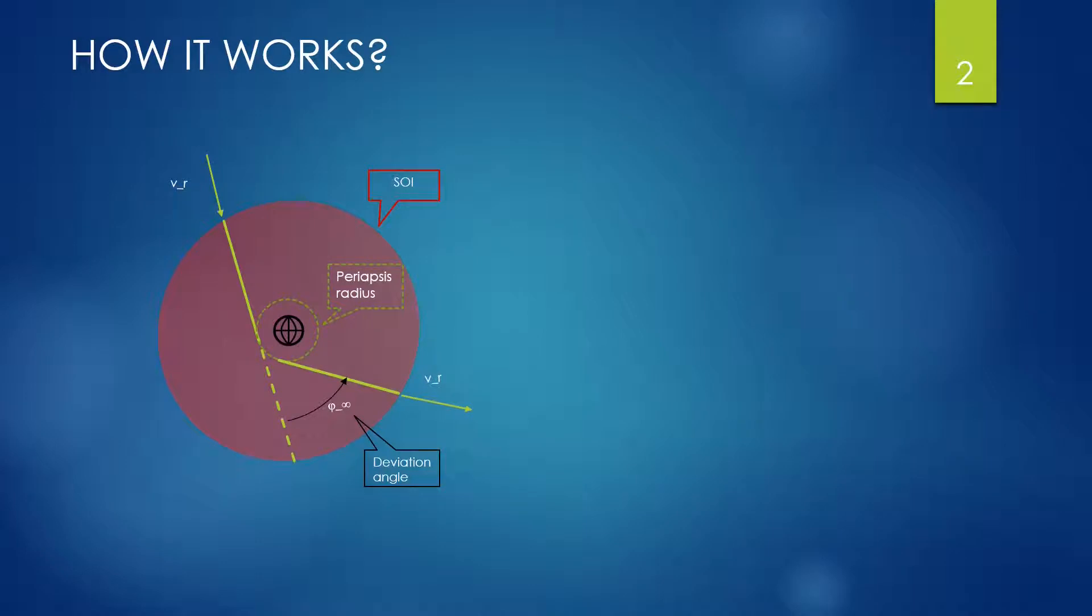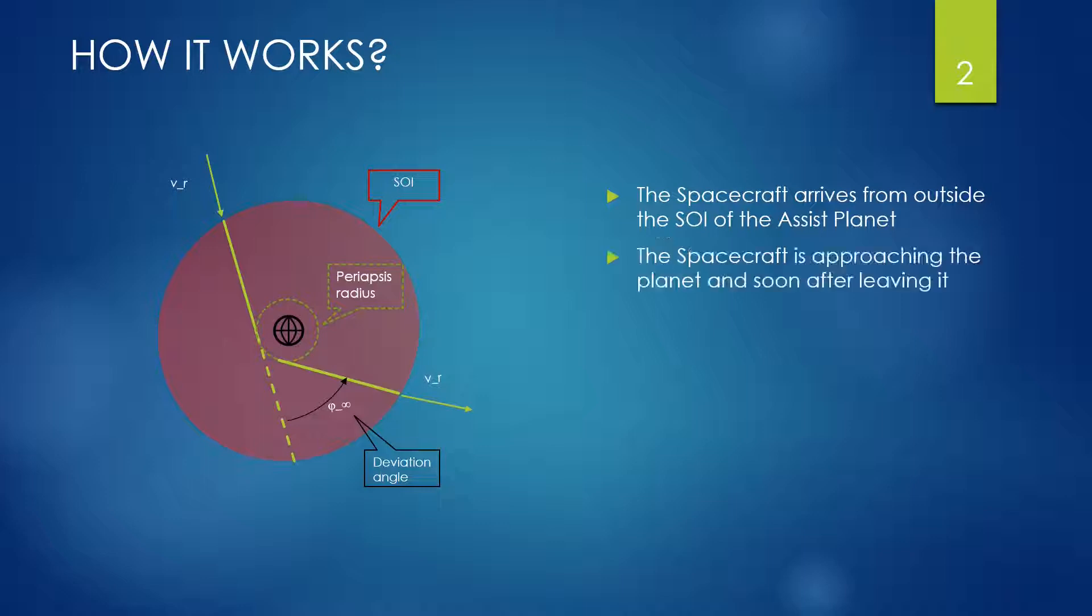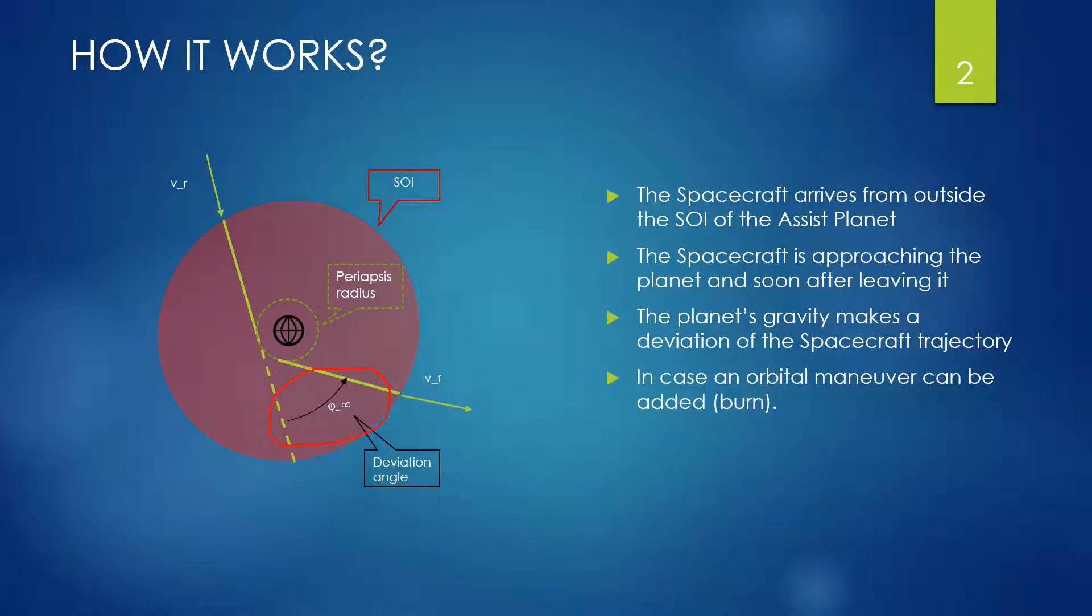We will start with some theory. What is the physical principle behind? Whenever a spacecraft approaches a planet from outside its sphere of influence it escapes the elliptical orbit and enters a hyperbolic one. Because it is hyperbolic it can never enter any orbit around the planet, so it will either crash or leave. However, the leaving direction is different from the entry one because the trajectory is deviated by a certain angle phi. Let's see how to determine it.